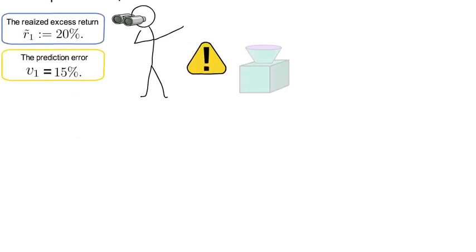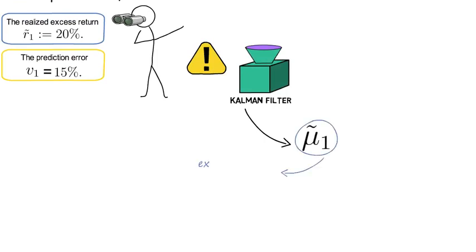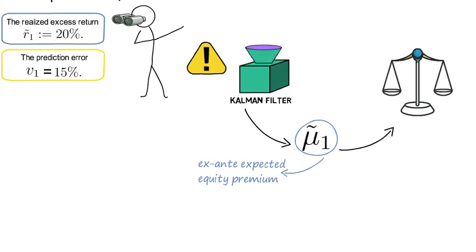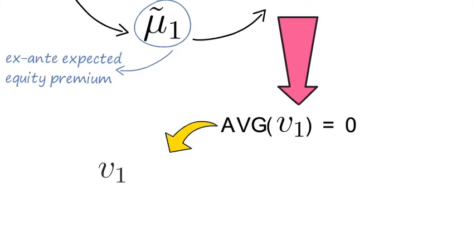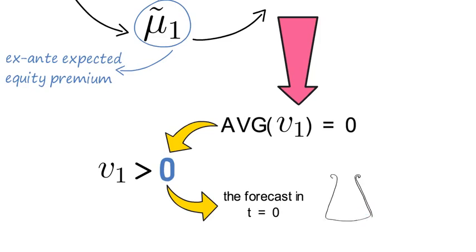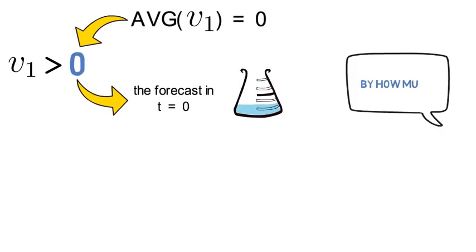Now let's denote that prediction error with the symbol v_1. Note the Kalman filter estimate for μ̃_1, so for the ex-ante expected equity premium, is unbiased. That says that the average prediction error needs to be zero. So a positive prediction error like in my example here gives us already an indication that if anything the forecast in t equals zero was too low. But by how much?